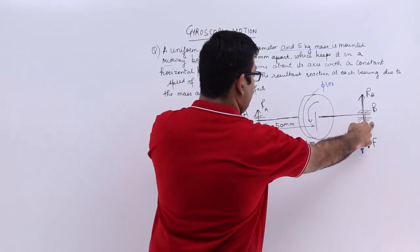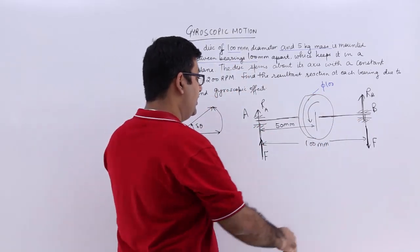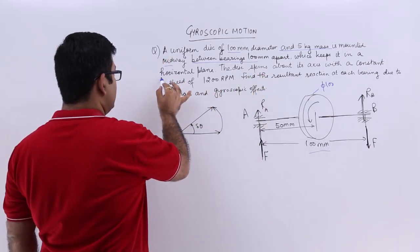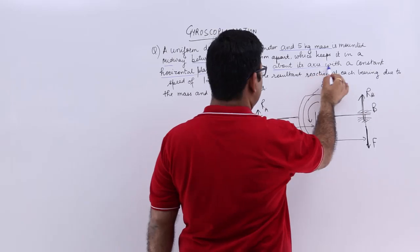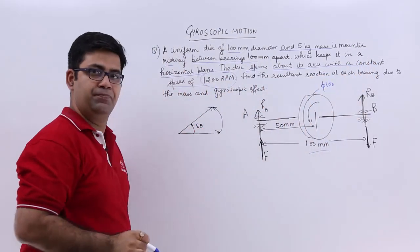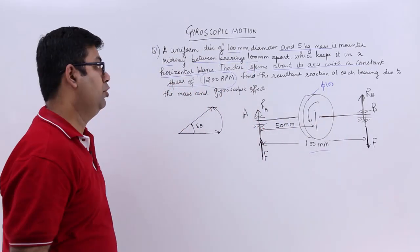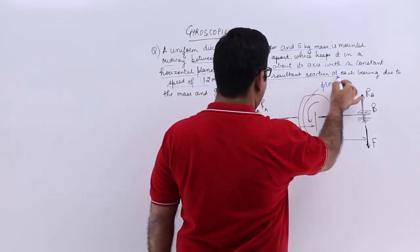So these are the two bearings and this disc is mounted on this shaft. The bearings are 100 mm apart which keeps it in a horizontal plane. The disc spins about its axis at a constant speed of 1200 rpm and it shows it is going in the anti-clockwise or counter-clockwise direction.